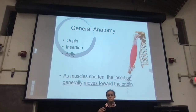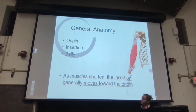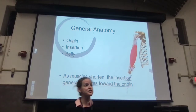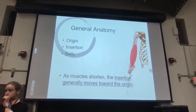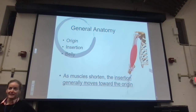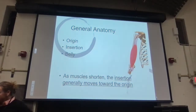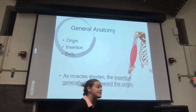I've been throwing around the terms origin and insertion — let's define them. Each skeletal muscle has a muscle belly covered with the epimysium. The whole muscle is made up of groupings called fascicles. Each fascicle is made up of muscle fibers. Each muscle fiber is made up of myofibrils. The myofibrils are covered by the sarcoplasmic reticulum, which functions to store calcium.